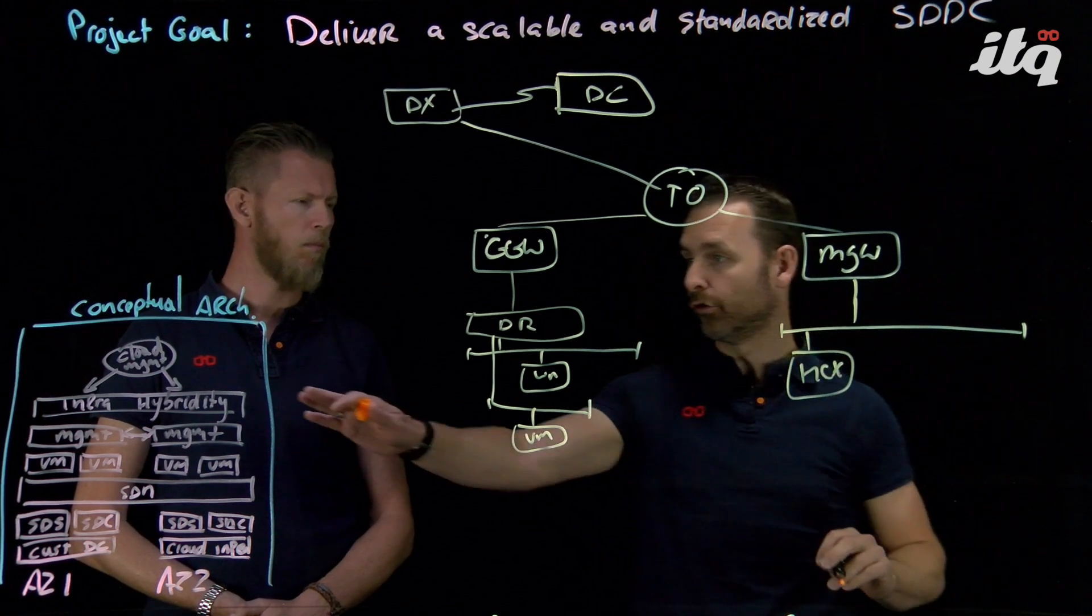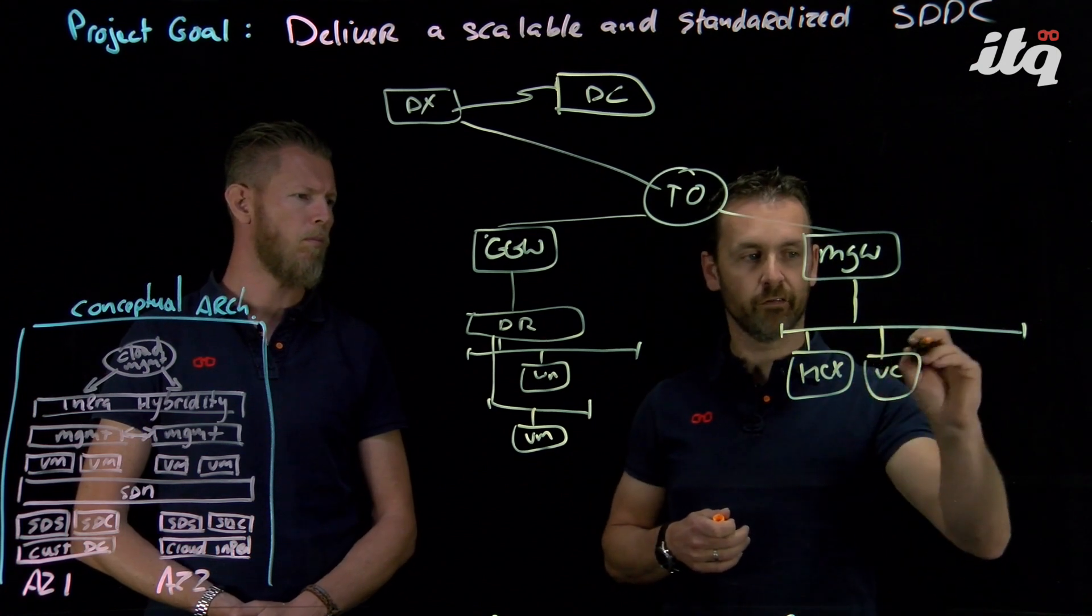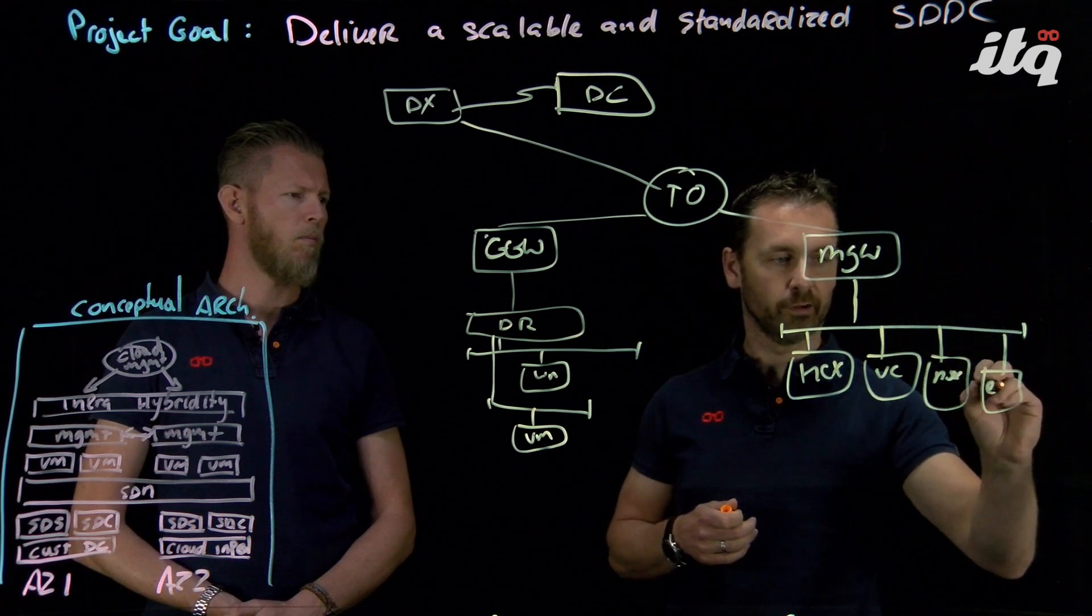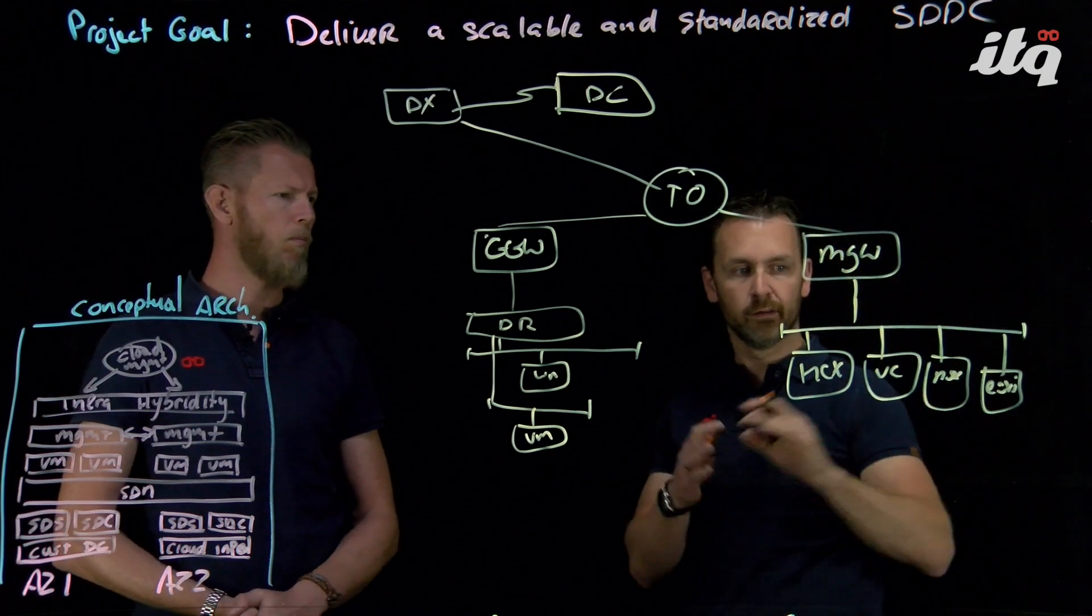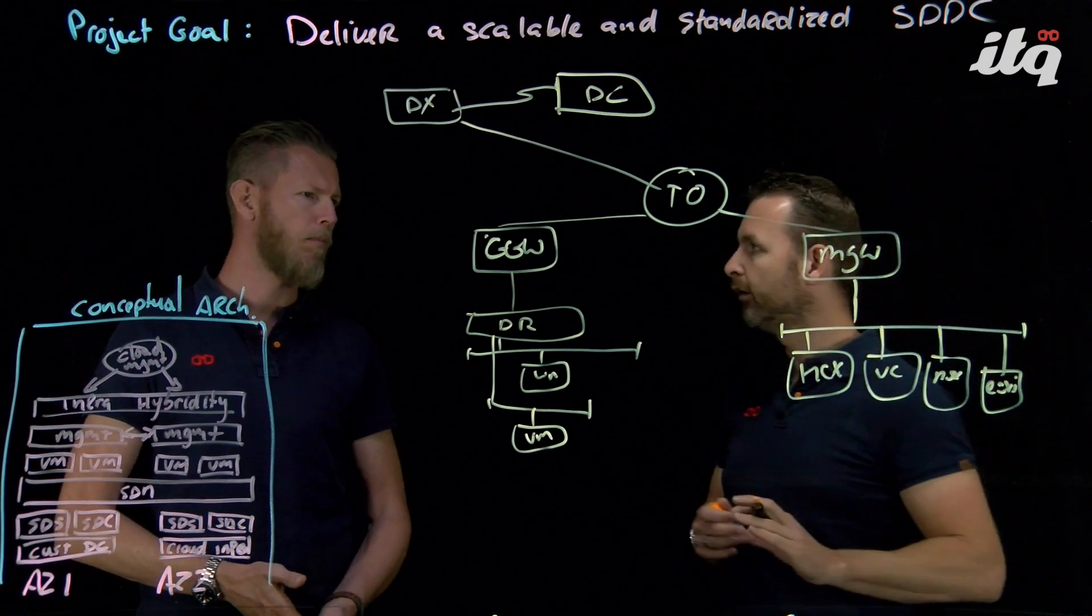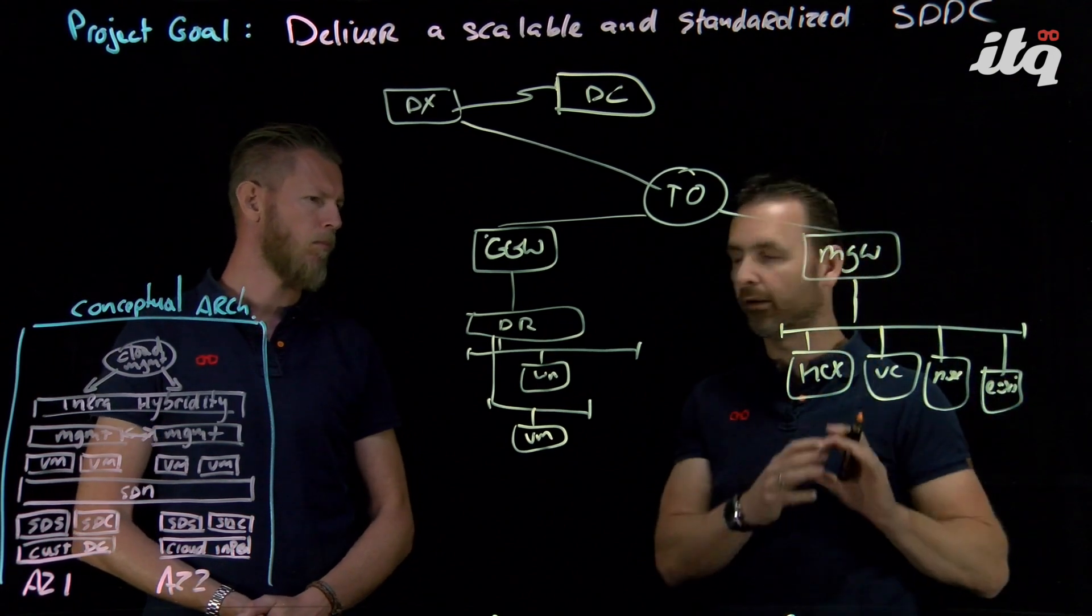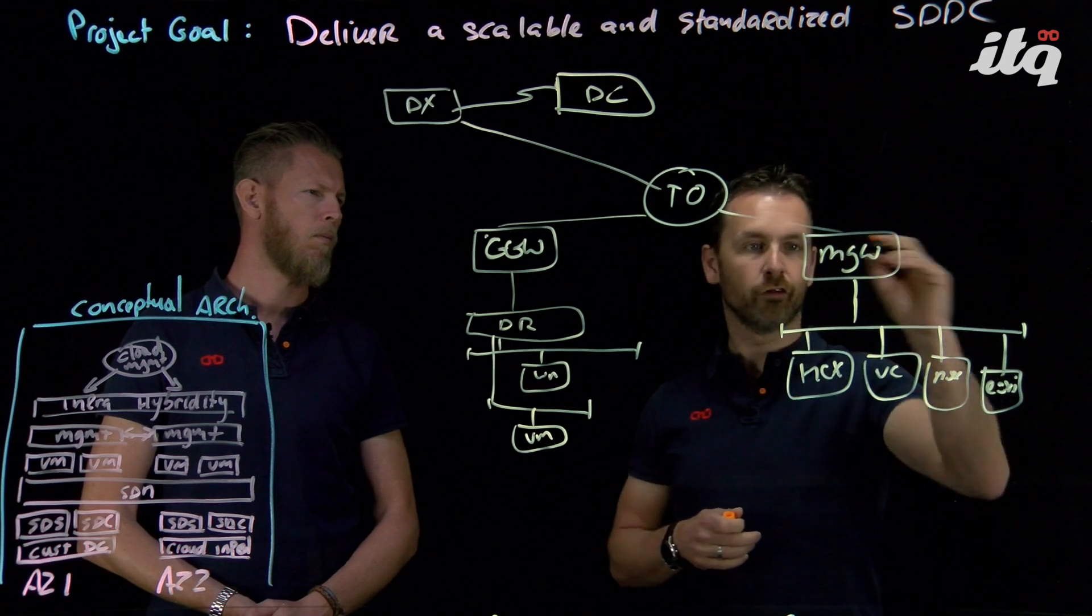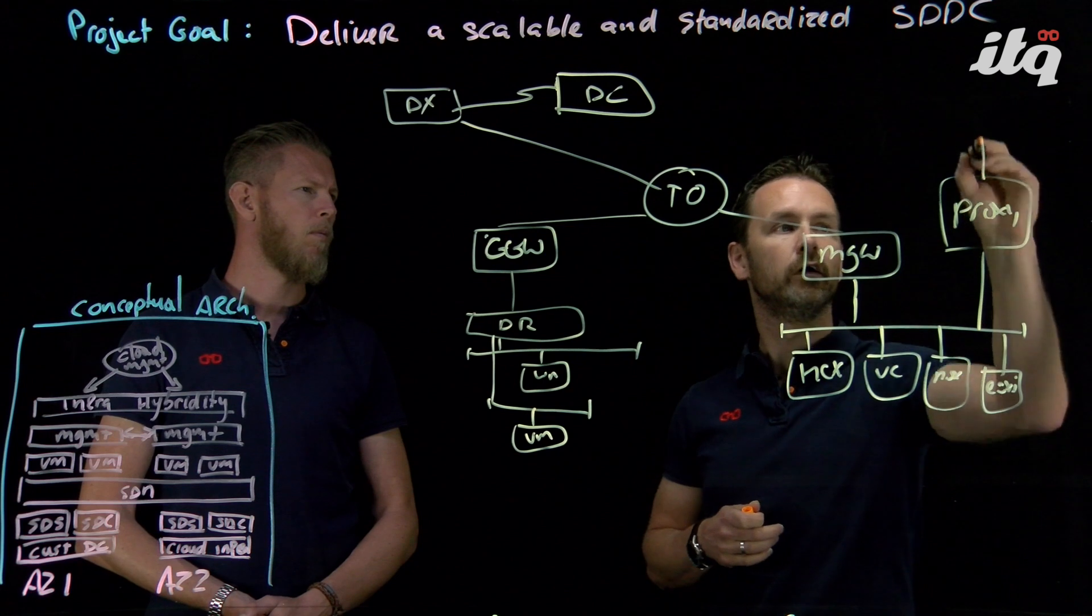On the management side we have a management network that contains all the stuff for HCX, the solution that we're going to use to create that hybridity. We have obviously vCenter server, we have NSX in here and we have our ESXi hosts, and again I'm not putting in IP addresses, I'm not putting in any of the... Exactly, and this is a managed service obviously so we don't have any control over it, but even if this were an on-prem design I'm not putting in any of those details.